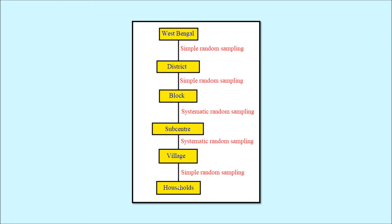From the sub-centers we select the villages by systematic random sampling, and from each village we can again select the households by simple random sampling. As you can see, there are multiple stages — we start with a bigger sampling unit, the state itself, then it gets smaller: district, block, sub-center, village, and households. We have also used different probability sampling techniques in different stages. This is an example of multi-stage sampling.